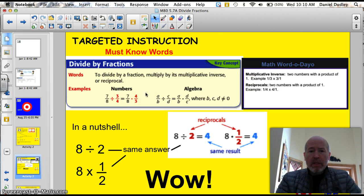A couple of quick review pieces here. To divide a fraction, multiply it by its multiplicative inverse, or its reciprocal. We talked about these two terms yesterday. So, 7 eighths divided by 3 fourths, you just flip this fraction and say 7 eighths times 4 thirds. Flip it to its reciprocal, and you'll get the answer.